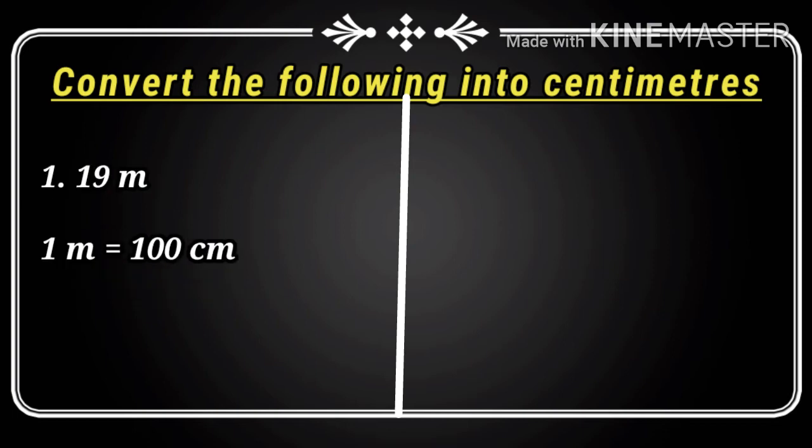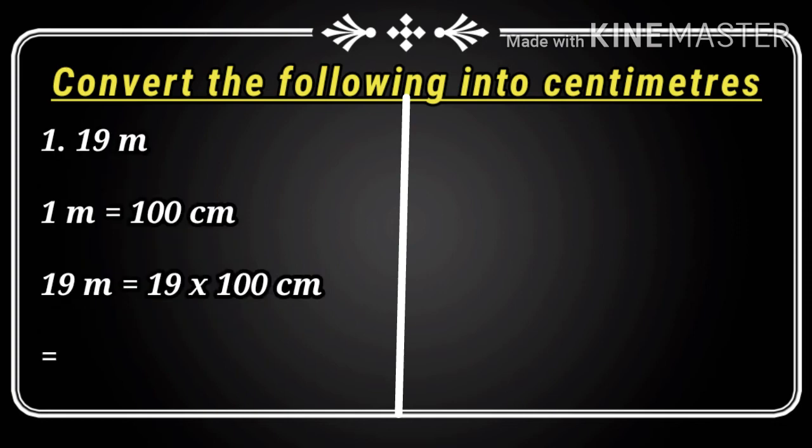The question is 19 meters. We know very well, one meter equals hundred centimeters. So 19 meters equals 19 multiplied by hundred centimeters, and the answer is 1900 centimeters.